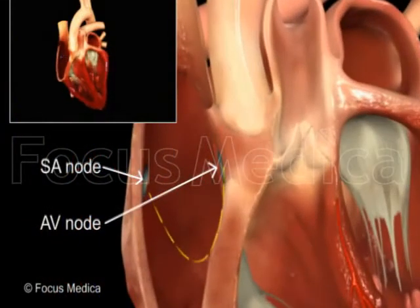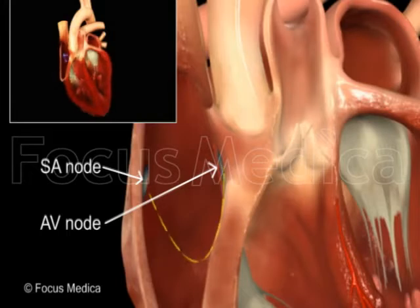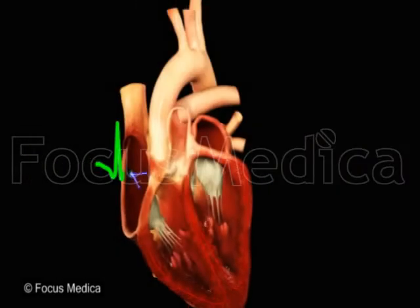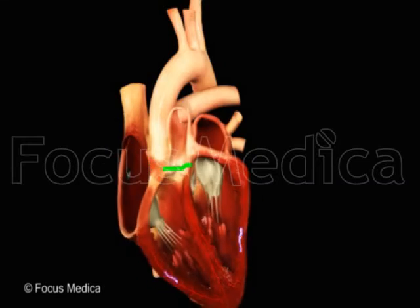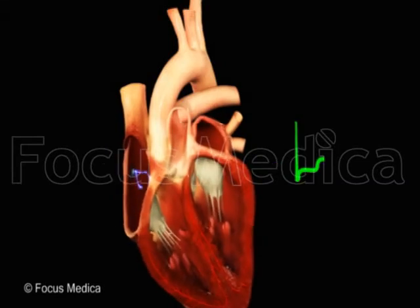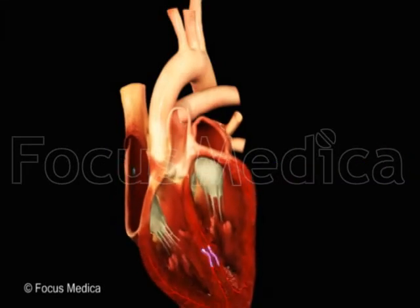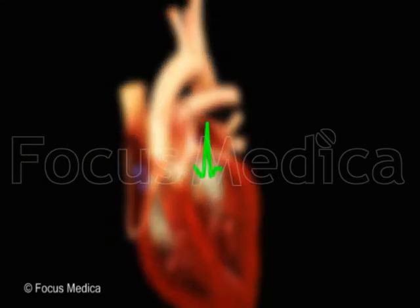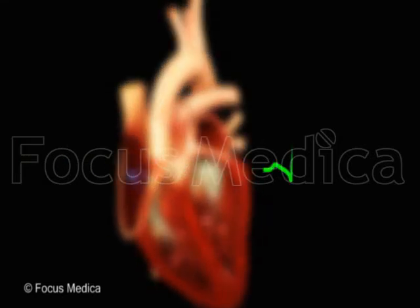The heart comprises built-in pacemakers that resemble electrical outlets. This electrical system of the heart triggers the heartbeat by action that resembles a spark plug firing a regular rhythmic pattern that regulates cardiac rhythm.